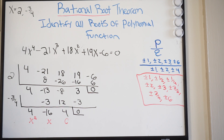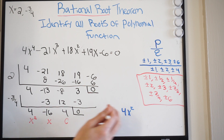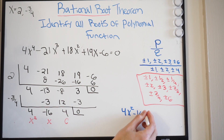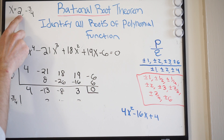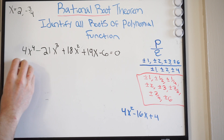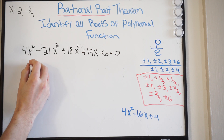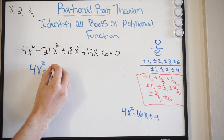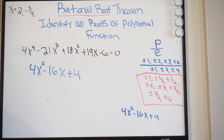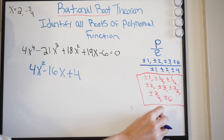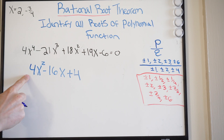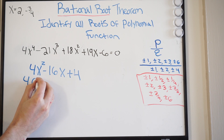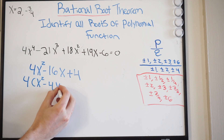So we know the zeros so far are 2 and negative 3/4. I'm going to rewrite the remaining expression as 4x squared minus 16x plus 4, all equal to 0. Before we go ahead and try to factor, let's see if we can take out a common term to make it easier. It looks like they all have a 4 in common, so let's take out a 4. This gives us 4 times the quantity x squared minus 4x plus 1.